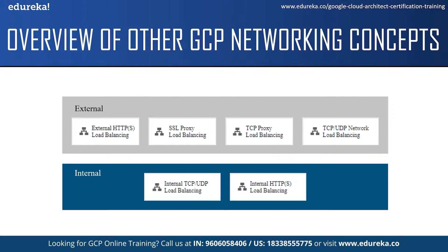To decide which load balancer best suits your implementation, consider factors such as global versus regional load balancing. You can use global load balancing when your backends are distributed across multiple regions, your users need access to the same application and content, and you want to provide access using a single IP address. You can use regional load balancing when your backends are only in one region. The next factor is external versus internal load balancing — external load balancers distribute traffic coming from the internet to your GCP VPC network, while internal load balancers distribute traffic to instances within the GCP network. Also consider the type of traffic: HTTPS, TCP or UDP.